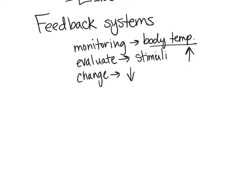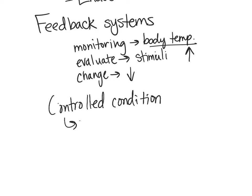We have what are called controlled conditions — a monitored variable. Examples include body temperature, blood glucose, levels of oxygen in the blood, levels of carbon dioxide in the blood, and pH. We don't want our body to get too acidic or too alkaline. These are the different variables our body is constantly monitoring.